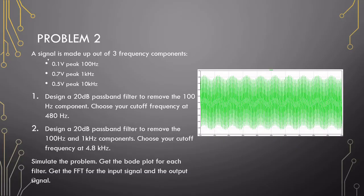The second problem, I give you a signal with three different frequencies in it. I tell you to design a filter with a 20 dB passband, so we can use a 10k, 1k configuration that we did in the previous problem. For the first one, I want to remove the 100 Hz component, so design a filter with 480 Hz cutoff frequency. This is a distance away from the 100 Hz, so more of the 100 Hz will be removed.